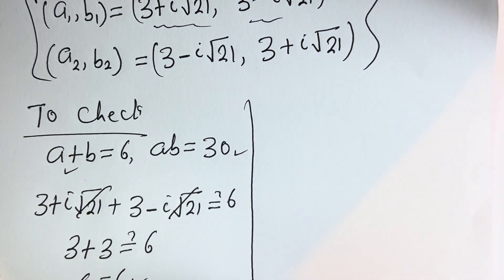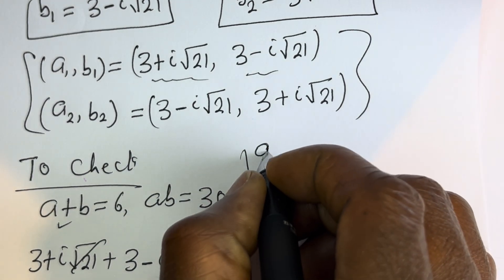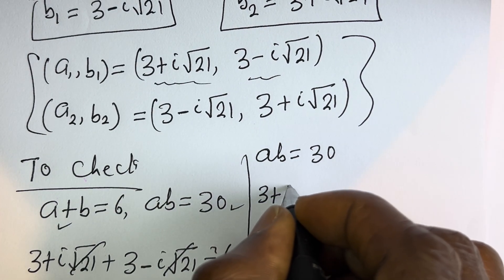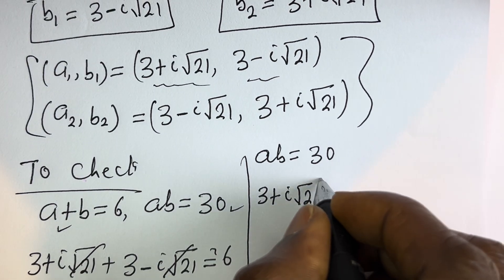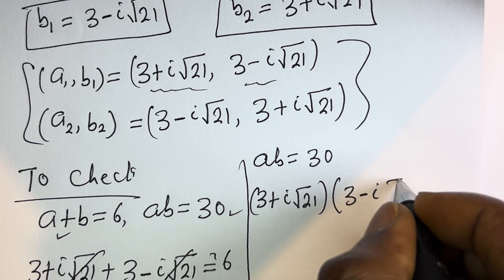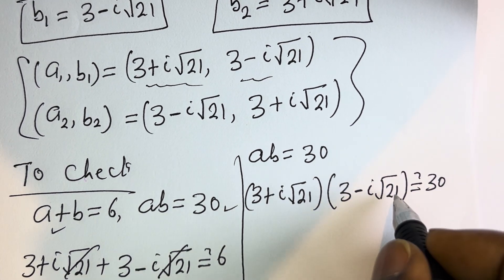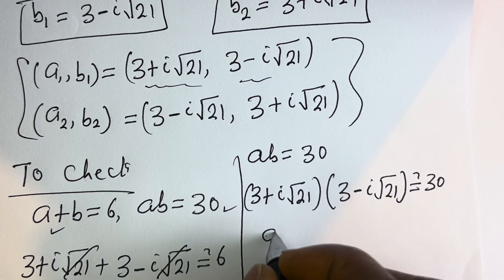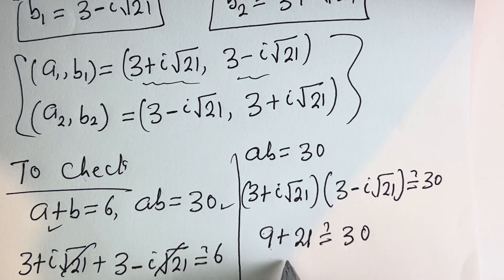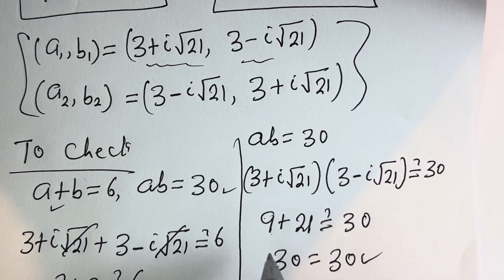Now let's check AB equals 30: (3 plus i square root of 21) multiplied by (3 minus i square root of 21). Expanding this gives 9 plus 21, which equals 30 — equal to 30, which is true. I hope you enjoyed the video. Thank you for watching.